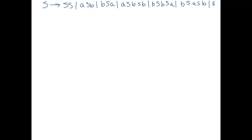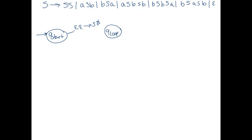We're going to start in state qStart. The first thing we do is we read nothing from either the input or the stack, and then we're going to push the bottom-of-stack marker and the start variable to the stack. The convention is that we push right to left — so where it says S dollar-sign, the S is going to be on the top of the stack and the dollar sign is going to be on the bottom. Then we end up in state qLoop. So right now our stack has dollar sign on the bottom and S on top of that.